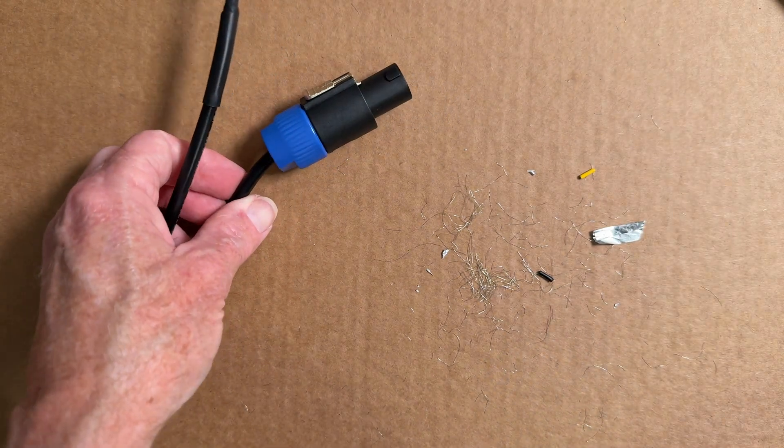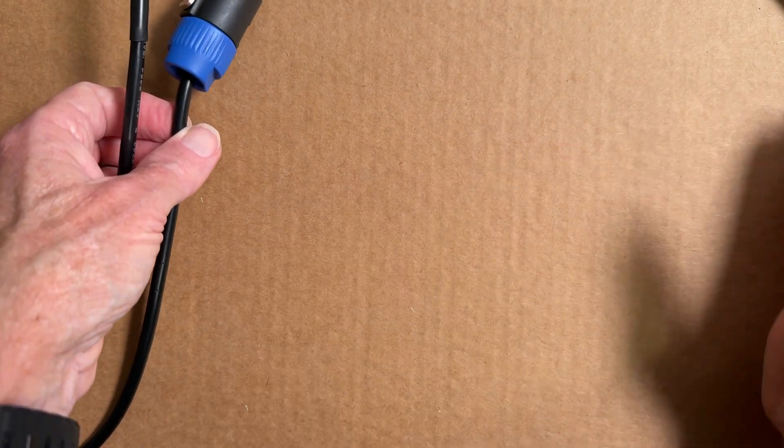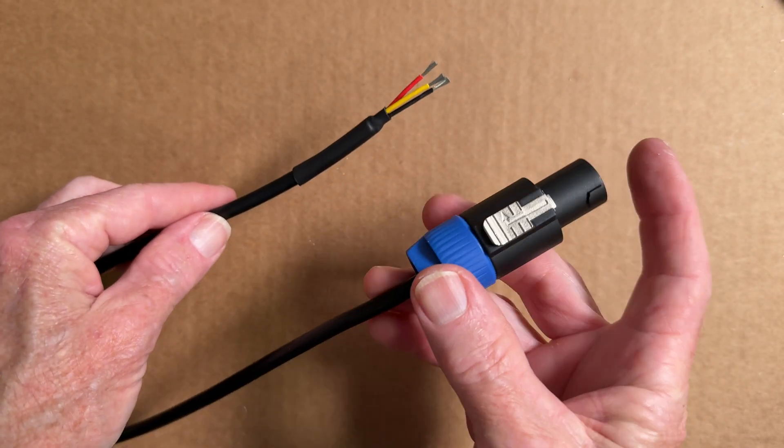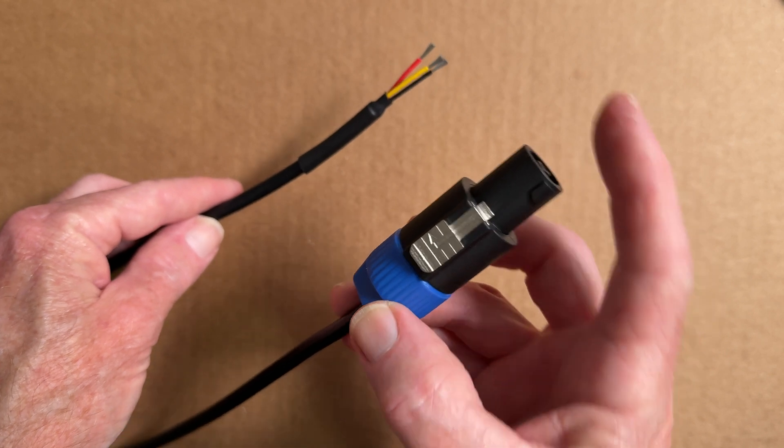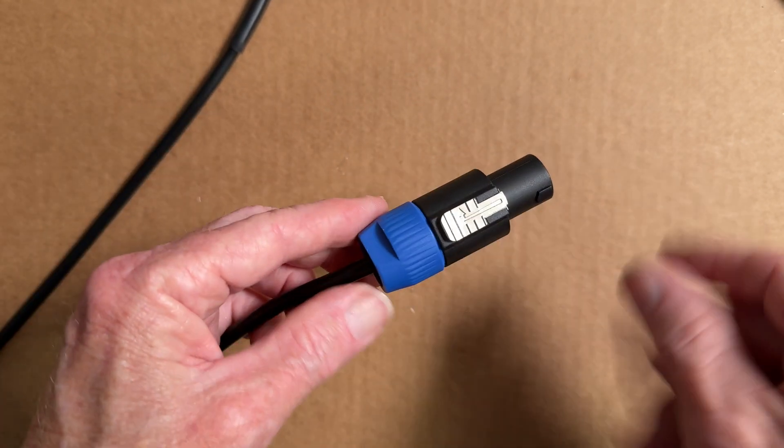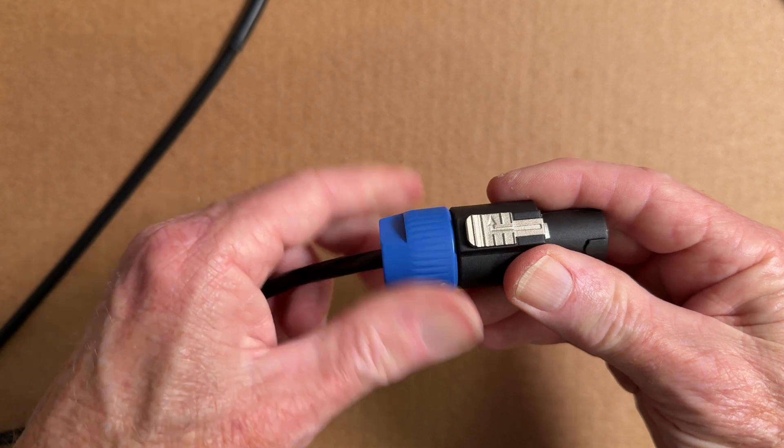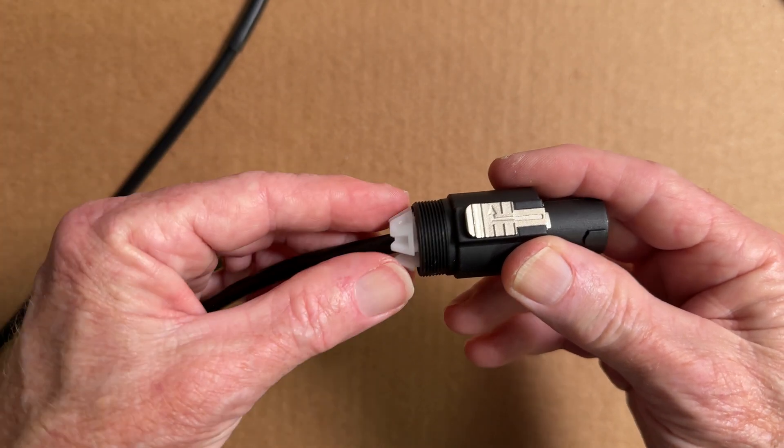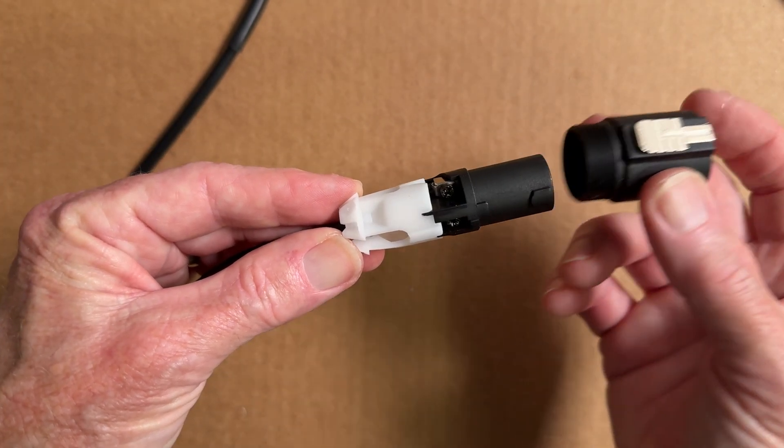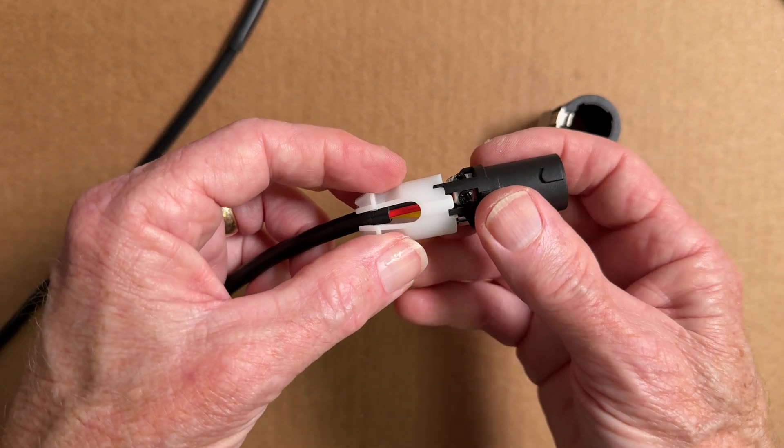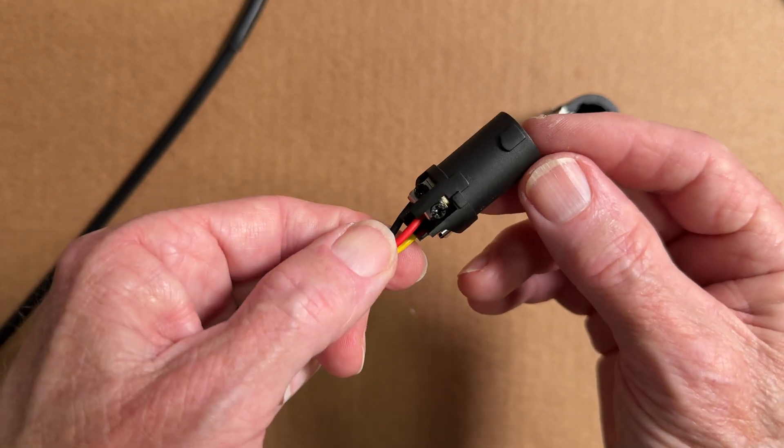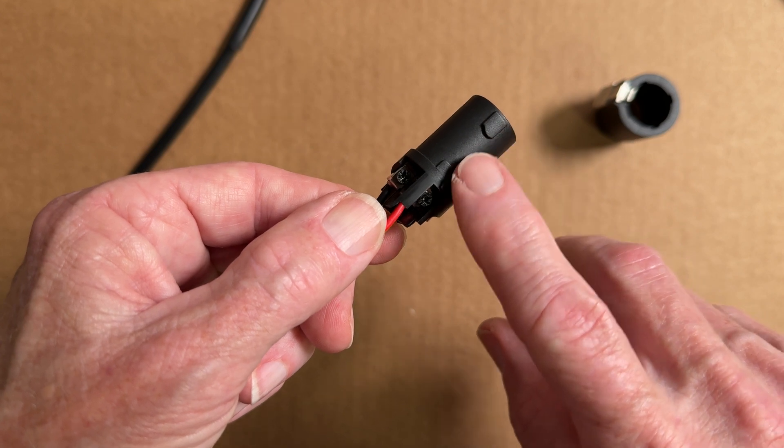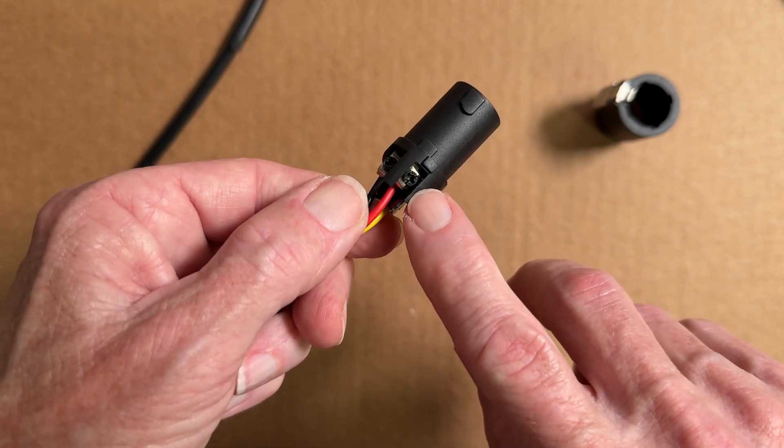We're going to transfer this Neutrik speakon connector over to our new wire. We're going to turn this blue collar counterclockwise, and that just drops out of the way. This part here will slide forward and come off. This little white cable clamp will come off. And now we can see where our three wires connect. Right here on the top, you'll notice a ridge here, here, and a third ridge right there, and that's where the red wire is connected. To the left is where the black wire is connected. If we roll it over this way, to the right of the red wire, there's nothing hooked up here.